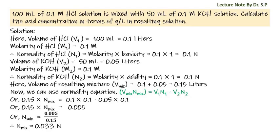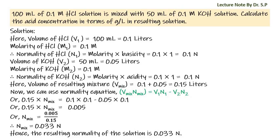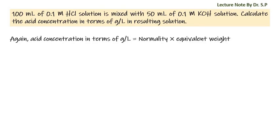If the normality had been found negative, we could conclude the resulting solution is basic in nature, because we considered V1·N1 for the acid solution and V2·N2 for the base solution. Hence the resulting normality of the solution is 0.033 N. The acid concentration in terms of grams per liter is equal to normality into equivalent weight.